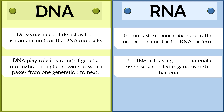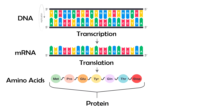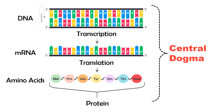The primary function of DNA is to store the genetic information that is passed from one generation to the next. Along with that, it also helps in development, functioning, and organization of the metabolic reactions occurring inside the cell. On the other hand, RNA acts as genetic material in lower, single-celled organisms. Along with that, RNA also helps in coding, decoding, gene expression, and protein synthesis.